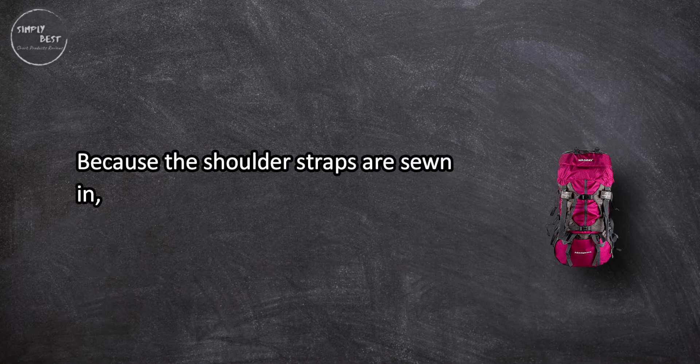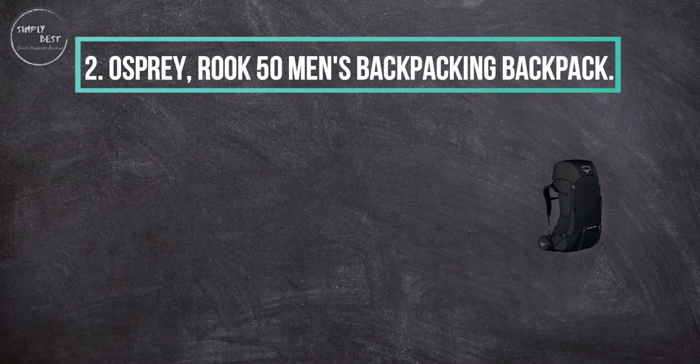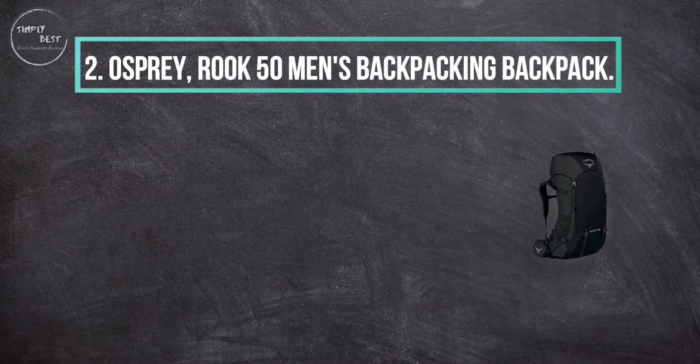Because the shoulder straps are sewn in, they are not adjustable, not a great fit for taller hikers. At number two, Osprey Rook 50 men's backpacking backpack.